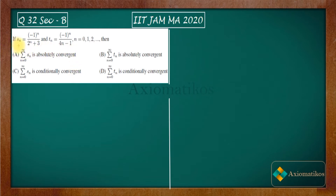If Sn is given by this and Tn is given by this, then we need to determine: summation Sn is absolutely convergent, summation Tn is absolutely convergent, it is conditionally convergent, and it is conditional. So from these statements, it is clear that we have to check the absolute and conditional convergence of the series summation Sn and summation Tn.